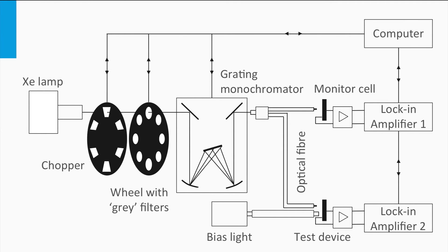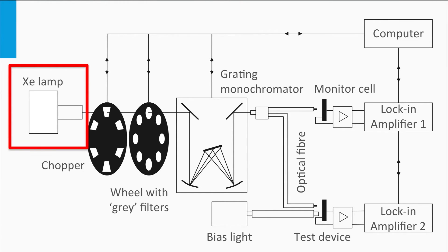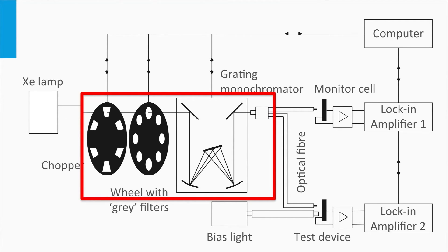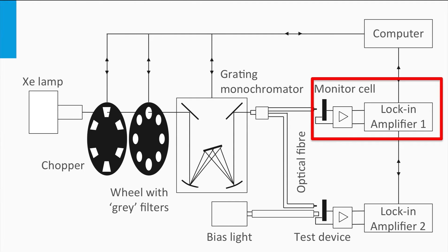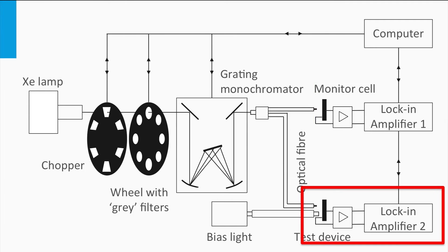EQE spectra are measured using an EQE setup, also called spectral response measurement. Such a setup needs a wavelength-selective light source, a calibrated light detector, and a current meter. A xenon lamp is a standard light source used in EQE setups, as it emits photons in the same spectral range of interest as the solar spectrum. Using filters and a monochromator, only light with a narrow band of photon energies is incident on the solar cell. First, using a calibrated detector, the number of photons per narrow wavelength band can be determined. Secondly, the current density generated by the solar cell is measured with the same photons incident on the cell. In this procedure, the number of collected electrons and the number of photons per wavelength are measured, and the EQE can be determined.